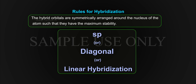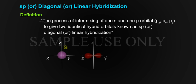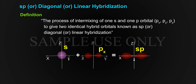SP or Diagonal or Linear Hybridization — Definition: The process of intermixing of 1 S orbital and 1 P orbital (Px, Py, or Pz) to give two identical hybrid orbitals is known as SP or Diagonal or Linear Hybridization.